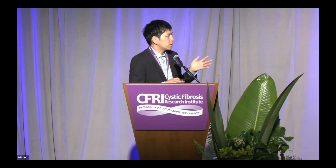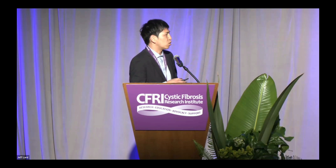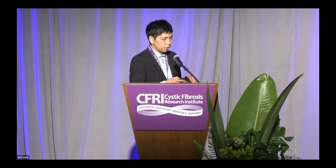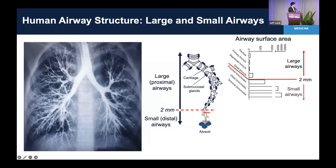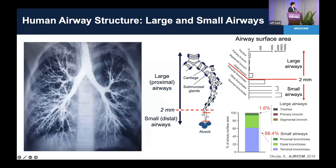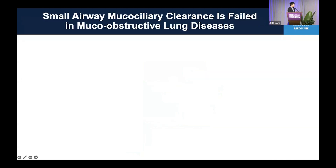When we calculate the total surface area from large to small airways, the small airways constitute a really large proportion of the surface area in the lung. When I calculate the actual proportion of surface area, actually 98 percent of airway surface area constitutes small airways. That suggests it's very important to understand how mucociliary clearance is regulated in the small airway regions.